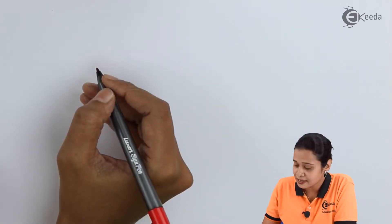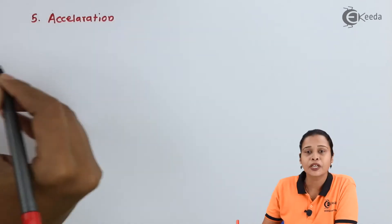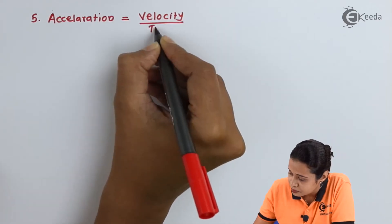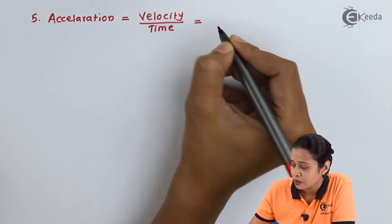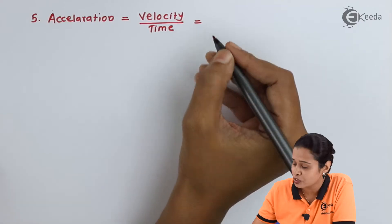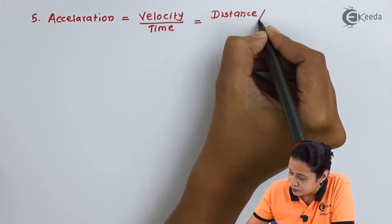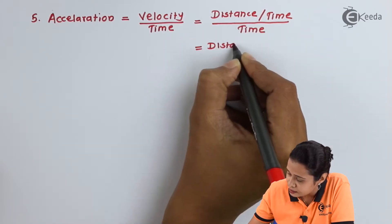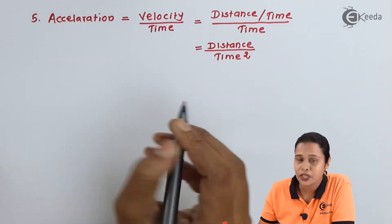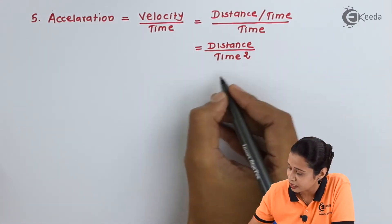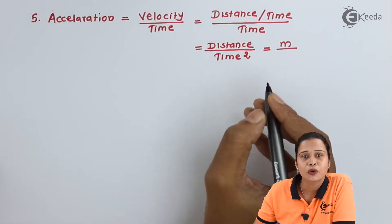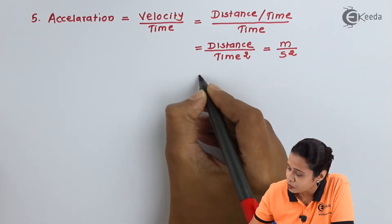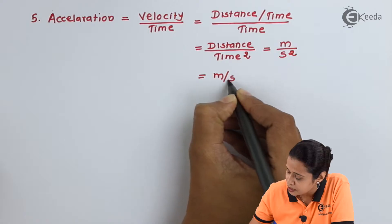The fifth quantity we will take is acceleration. We know acceleration is velocity per unit time. The unit of velocity is distance per unit time, so we have distance upon time squared. Distance is expressed in meters and time in seconds. Hence the unit of acceleration is meter per second square.